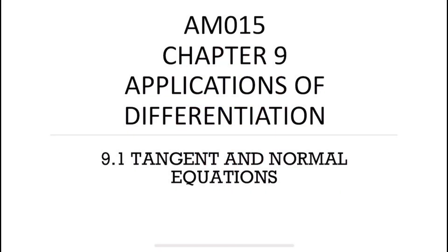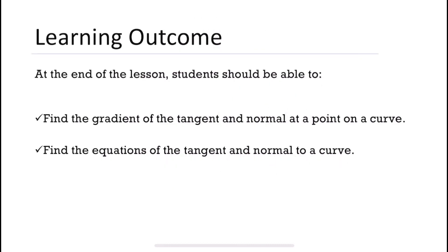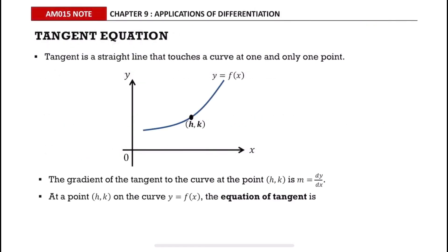In this video we are going to learn about the tangent and normal equations. Tangent is a straight line that touches a curve at one and only one point. The gradient of the tangent to the curve at the point (h, k) is denoted as m, which equals dy/dx, or the first derivative of the curve at the point (h, k).